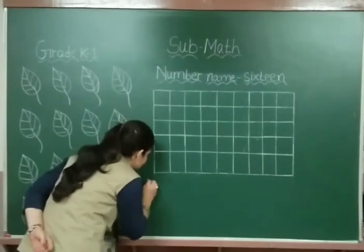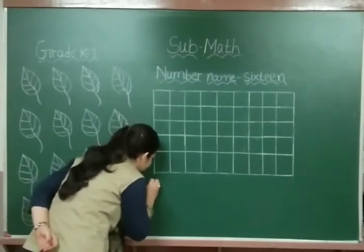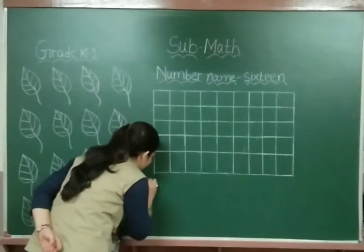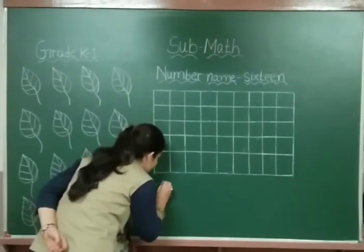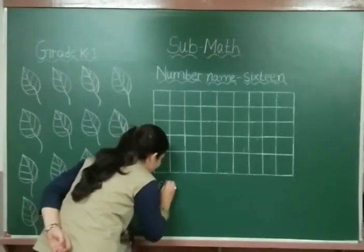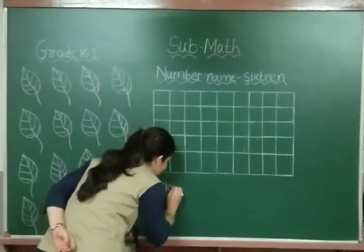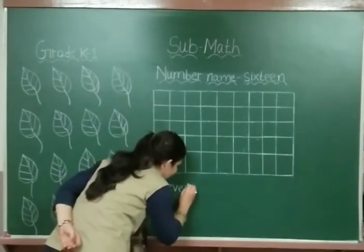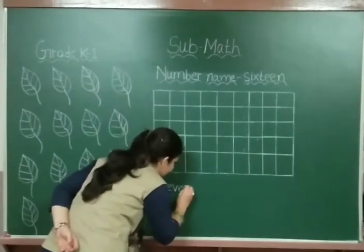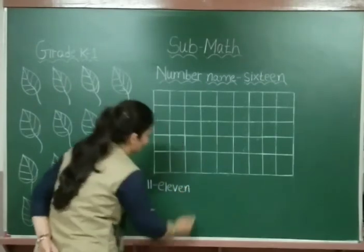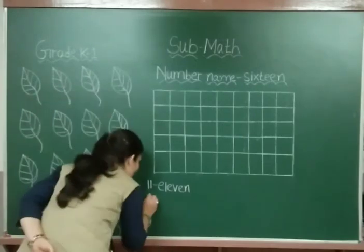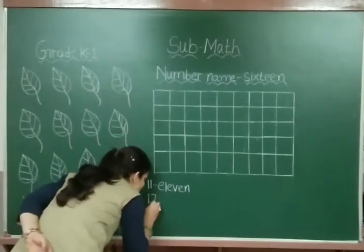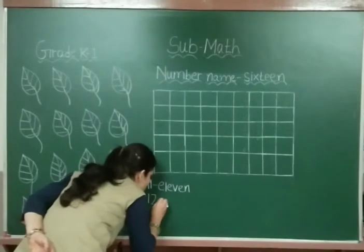See here. What is the spelling of 11? Can you tell me? E-L-E-V-E-N, 11. This is 1, 2, 12.